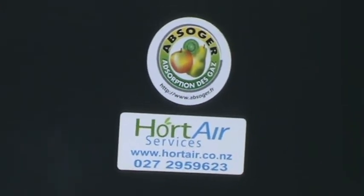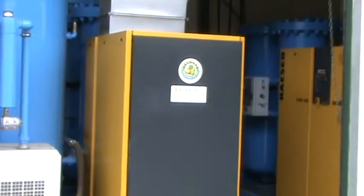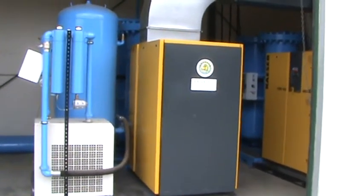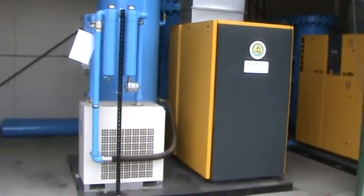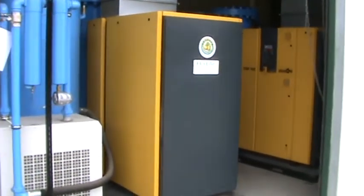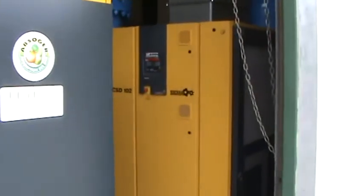These are the latest generation Absogere mobile nitrogen generators. Although these are fixed units, each unit has a 55 kilowatt Kaiser compressor on it working at 8 bar.